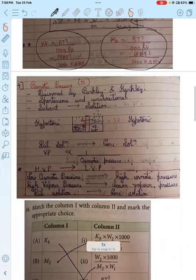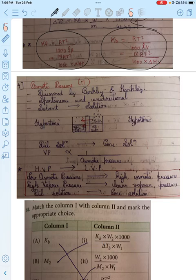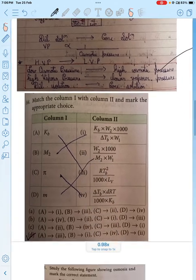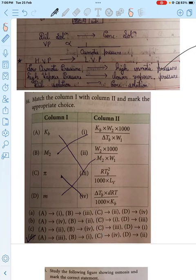Then osmotic pressure. It goes from low osmotic pressure to high osmotic pressure, high vapor pressure to low vapor pressure, dilute solution to concentrated solution. Let's see what type of questions are being asked. Direct formula-based questions: Kb tell, m² tell, π tell - what is π and then m value is asked. This is a match the following type question.